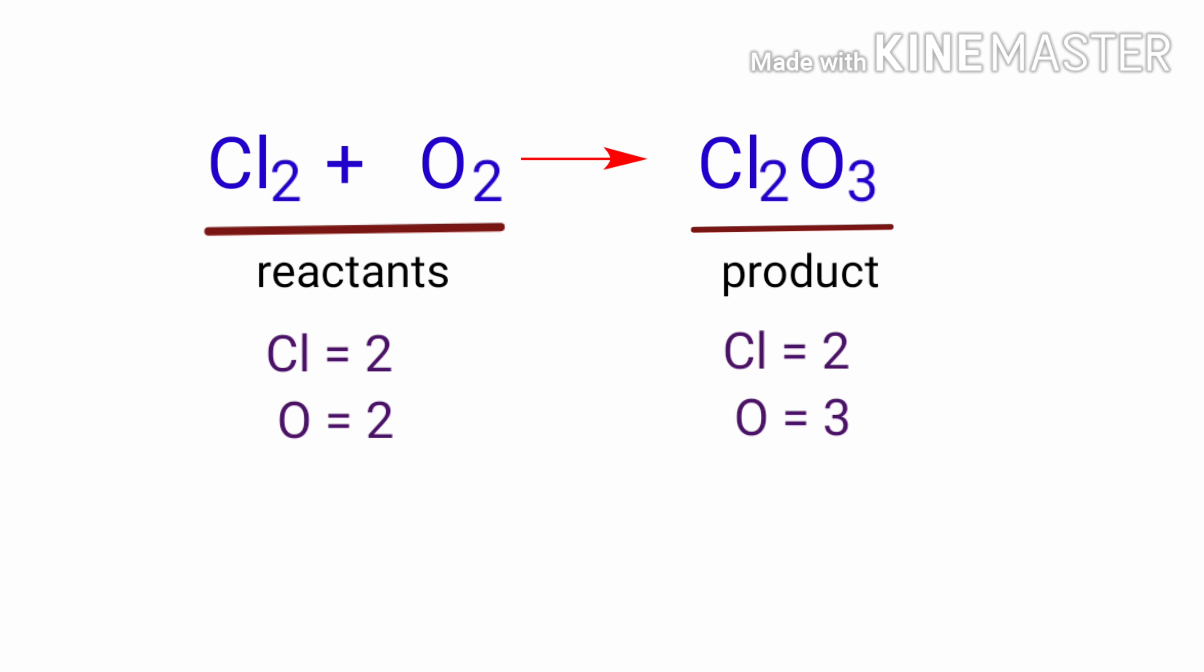If you look at this equation, the equation is not balanced. In the reactants side, there are two chlorine atoms and two oxygen atoms. And the products side, there are two chlorine atoms and three oxygen atoms. The number of atoms are not balanced on both sides.